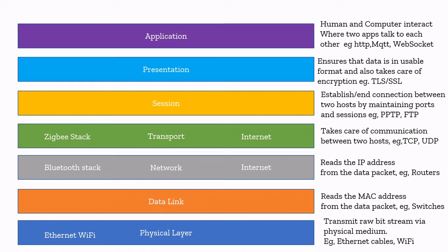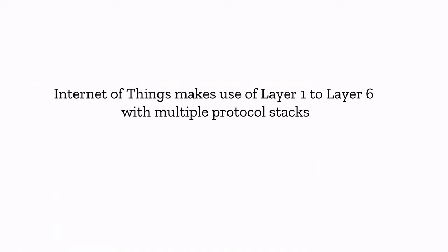The Internet of Things makes use of layers 1 to 6 with multiple protocol stacks — Bluetooth, Zigbee, and whatever protocol the device uses. If you are building an application using Bluetooth, you need a separate gateway and a separate application to access that device. The same applies to Zigbee. There is no proper standard so far to connect or control all these devices from a single interface. That is the problem Web of Things comes to address.